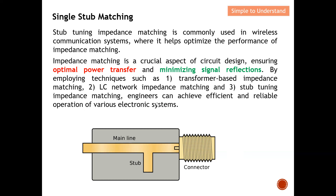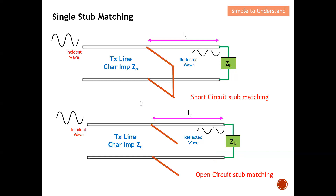Let's go into more detail on single stub matching. I want to emphasize the short and open circuit configurations: as you can see, one position is shorted and the other is open, which is how we get the names short-circuit stub matching and open-circuit stub matching. Let's do a detailed discussion on how a single stub performs impedance matching.